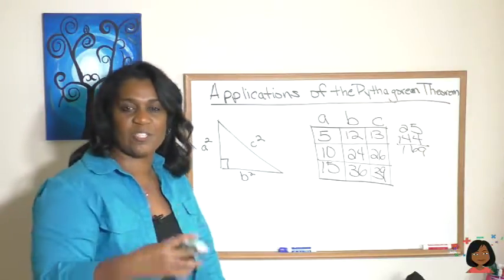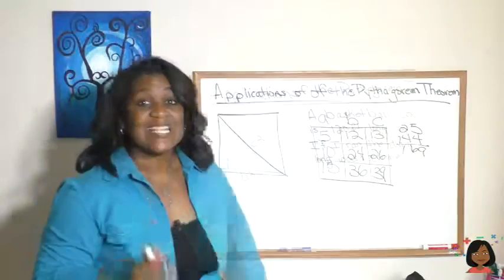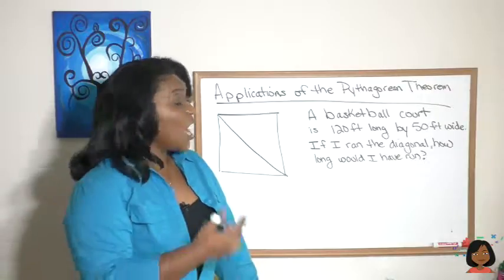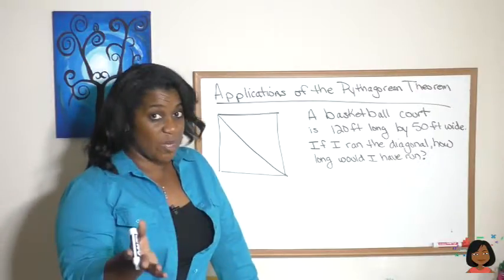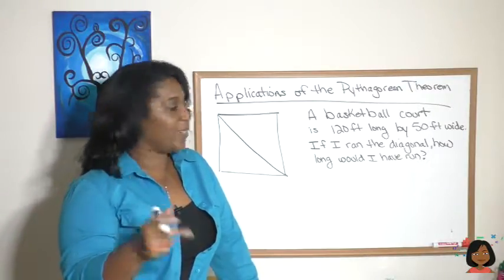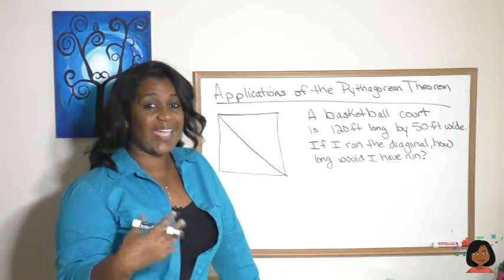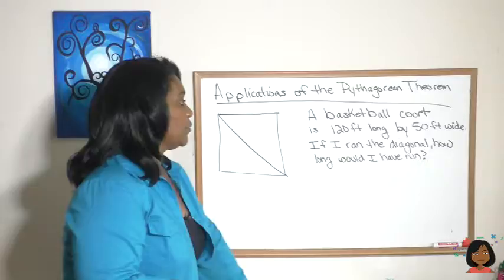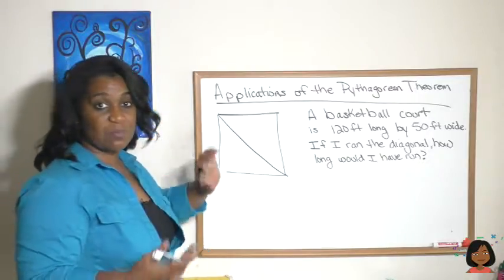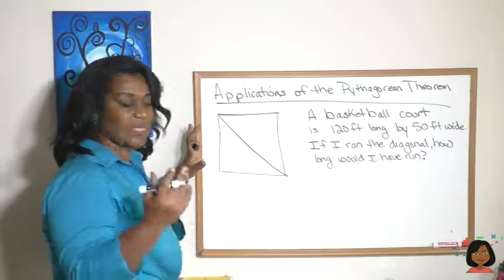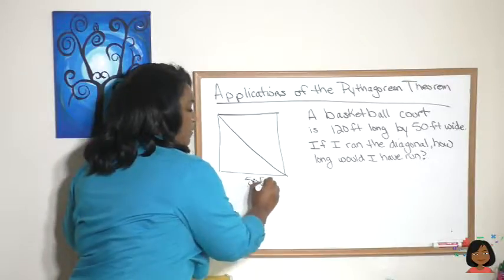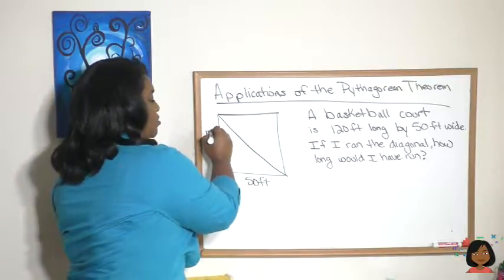Okay, now let's figure out how we can apply this in real world problems. Take a look at this example. A basketball court is 120 feet by 50 feet wide. If I ran the diagonal, how long would I have run?